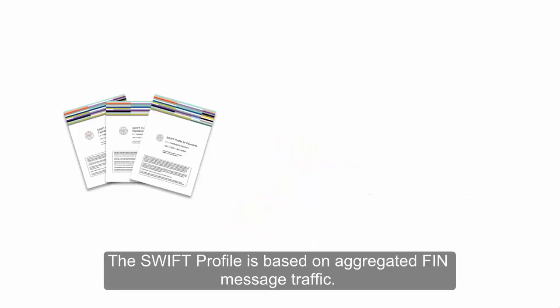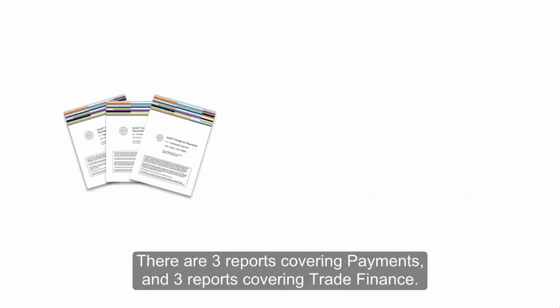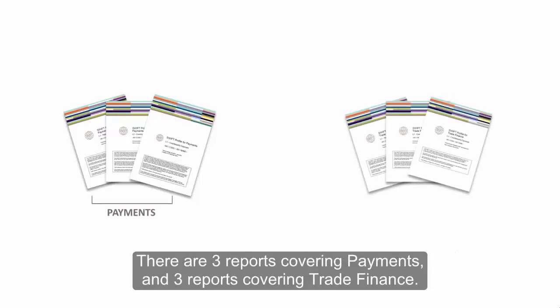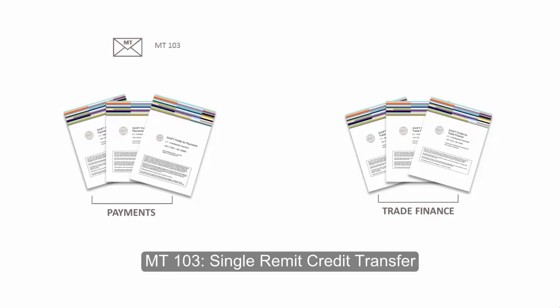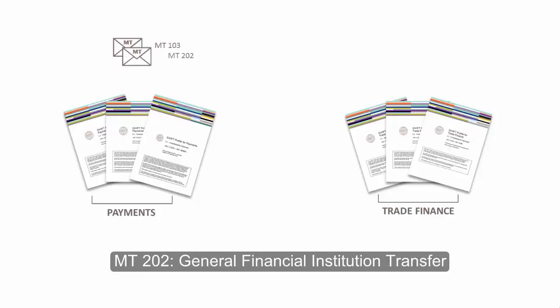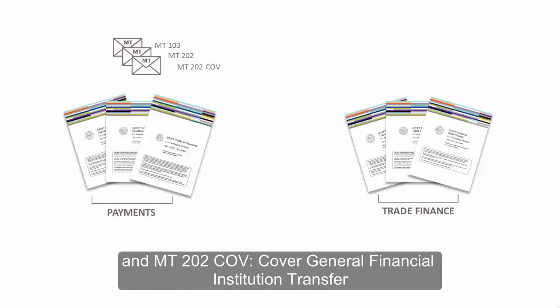The SWIFT profile is based on aggregated FIN message traffic. There are three reports covering payments and three reports covering trade finance. The following FIN message types are used to compute the payments report: MT-103 single remit credit transfer, MT-202 general financial institution transfer, and MT-202 COV cover general financial institution transfer.